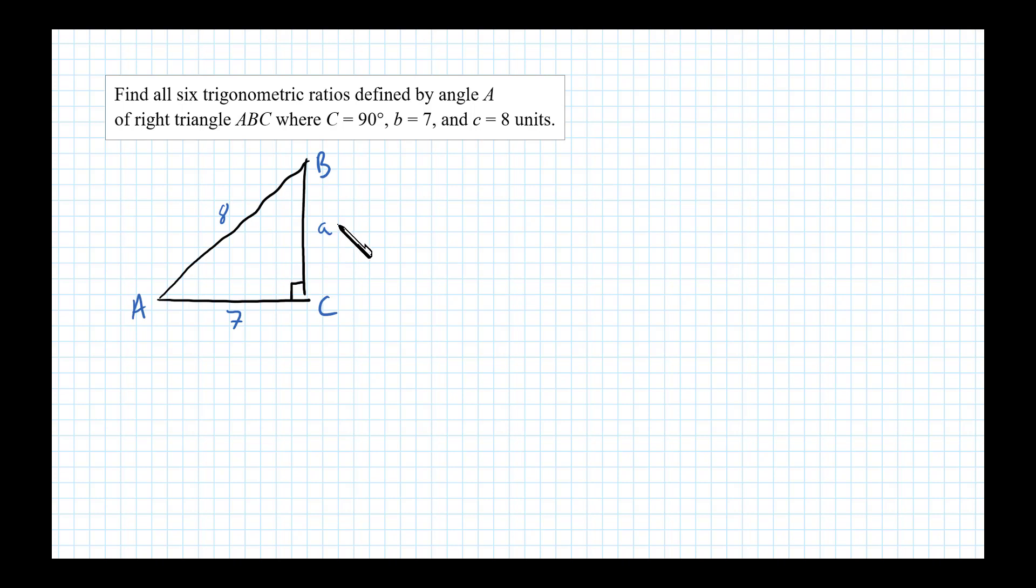We can do that using the Pythagorean theorem. In other words, a squared plus 7 squared has to equal 8 squared. Leg squared plus leg squared equals the hypotenuse squared. Solving for a, we see a squared plus 49 equals 64, so a squared equals 15.